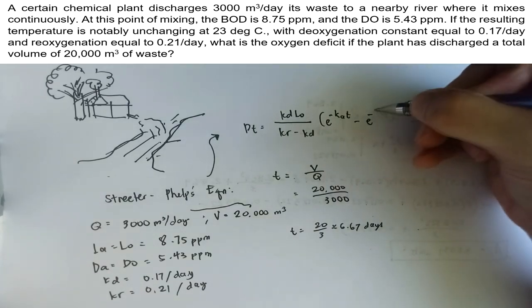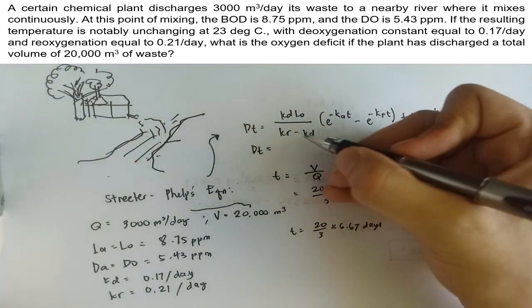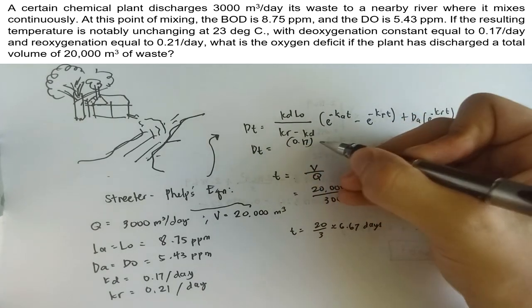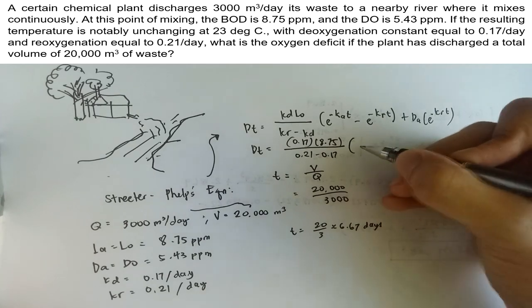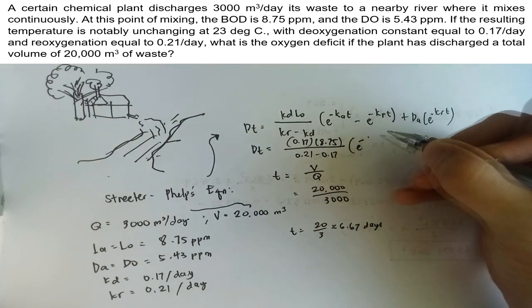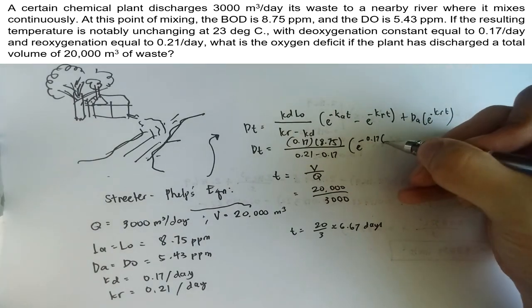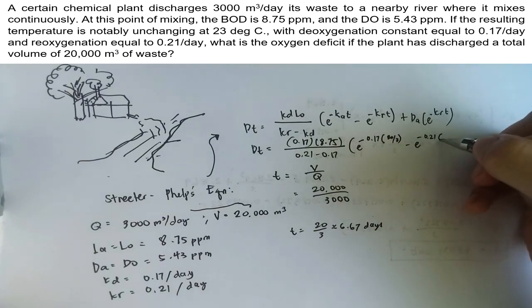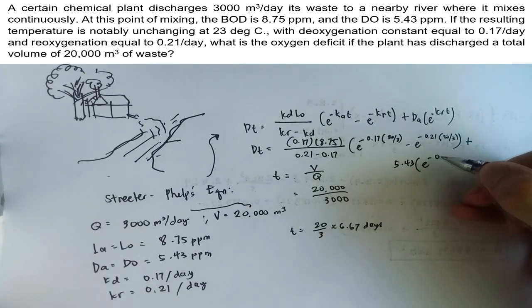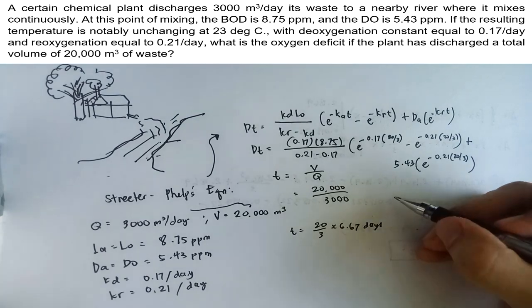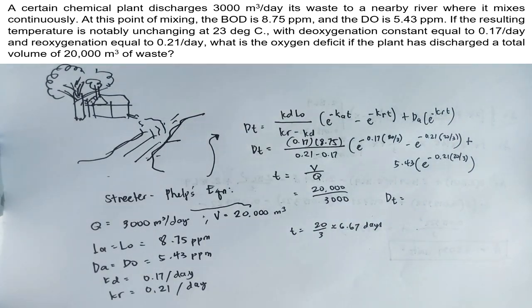To find the oxygen deficit, we just need to substitute the values. Oxygen deficit is simply 0.17 times 8.75 divided by 0.21 minus 0.17, multiplied with e raised to negative 0.17 times 20 over 3 minus e raised to negative 0.21 times 20 over 3, plus the dissolved oxygen at that point of mixing, that is 5.43 times e raised to negative 0.21 times 20 over 3. By simply using our calculator, we get 4.1415 ppm.